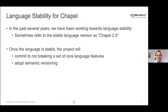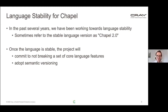In the past several years, as Brad was mentioning earlier, we've been working towards language stability. We call this Chapel 2.0 sometimes. The 2.0 there refers to a version of the language, not the compiler — kind of like C99 is a version of C. The idea is that once the language is stable, the project will commit not to breaking a set of core language features and to adopt semantic versioning.